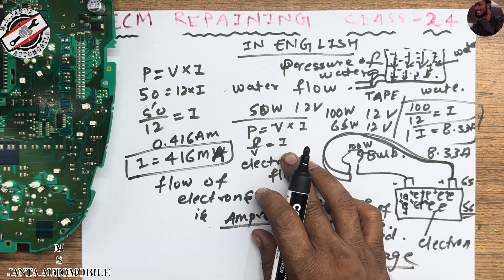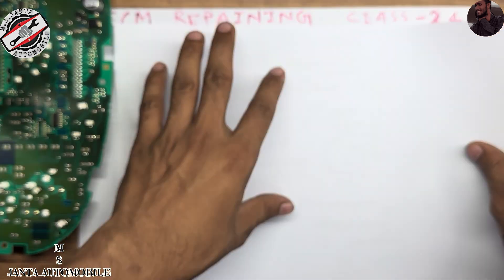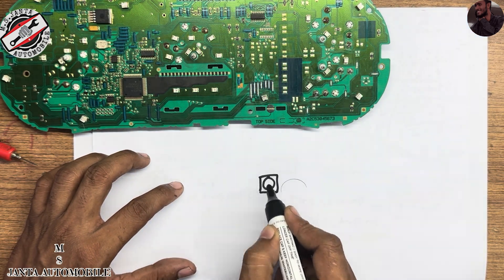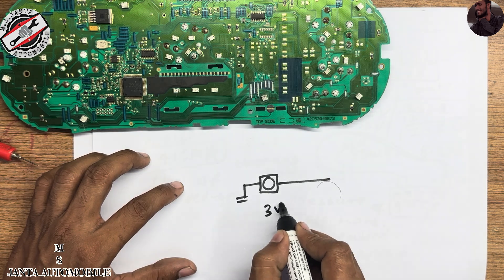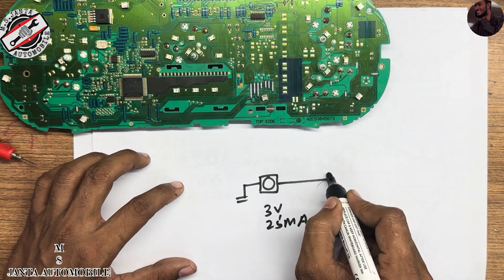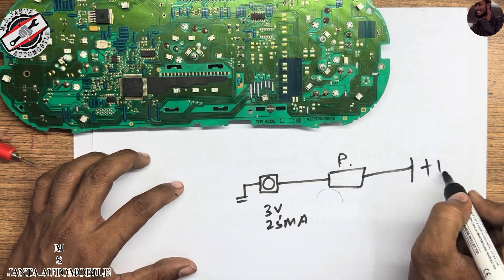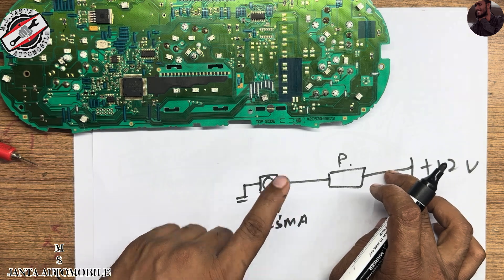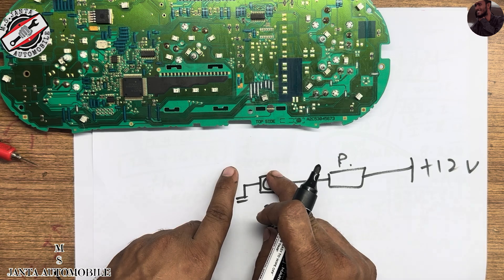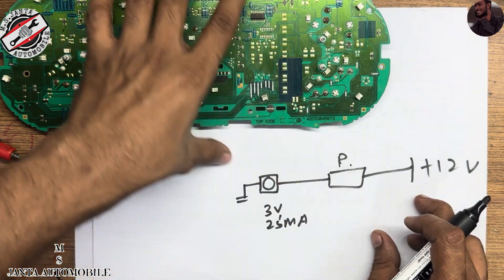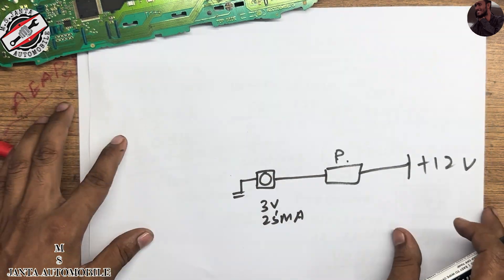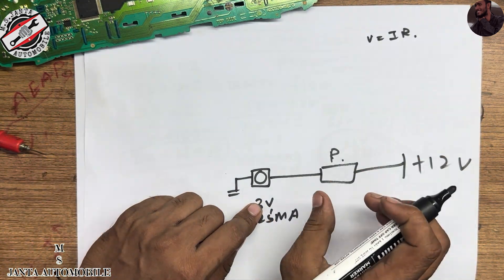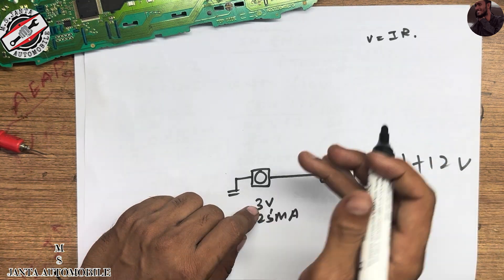The second question: in a previous video we discussed how to find the resistance value for an LED. If you have a 3V 25mA LED but you need to supply 12V, if you supply 12V directly the LED will fuse. So, according to Ohm's law V = IR, the voltage drop needed is 12 minus 3, which equals 9V.